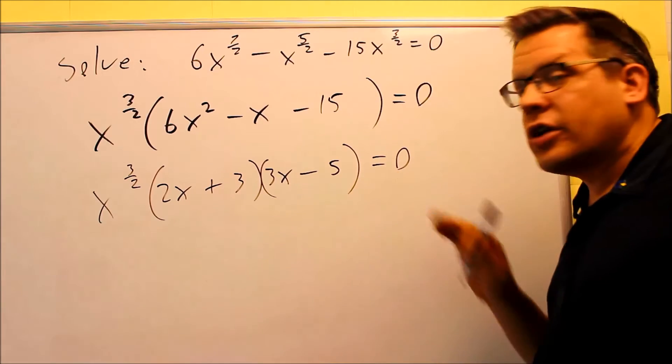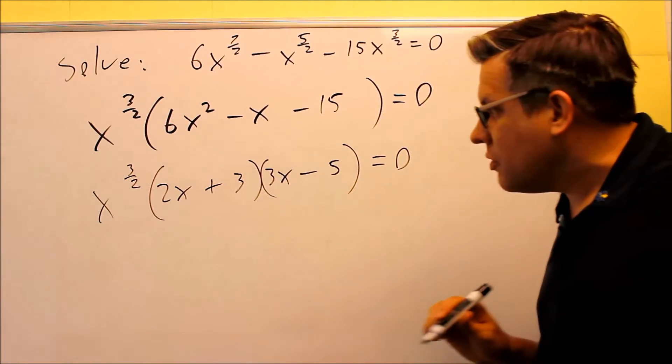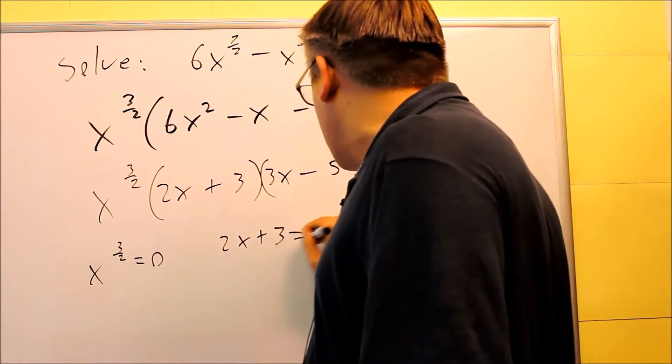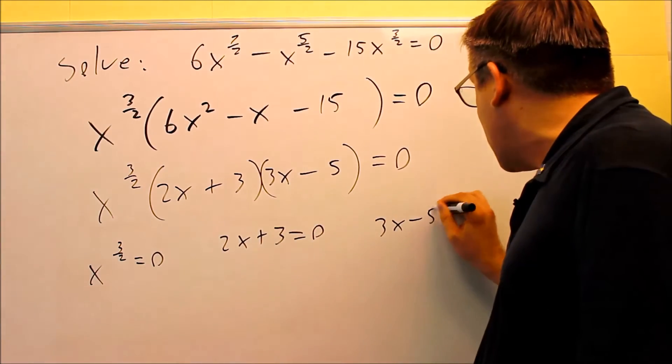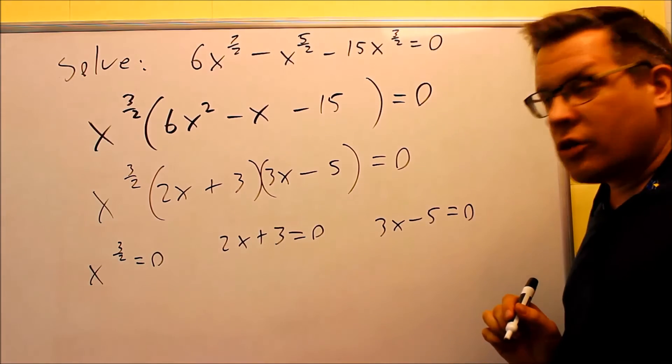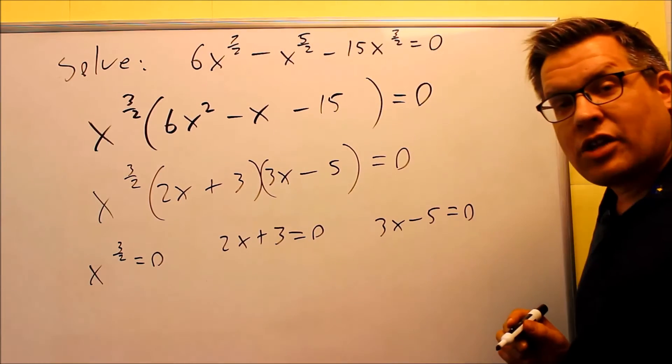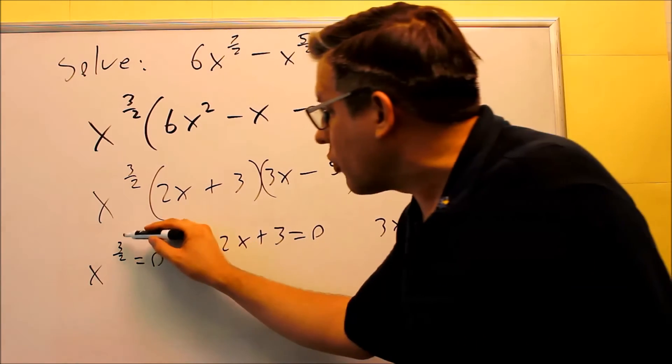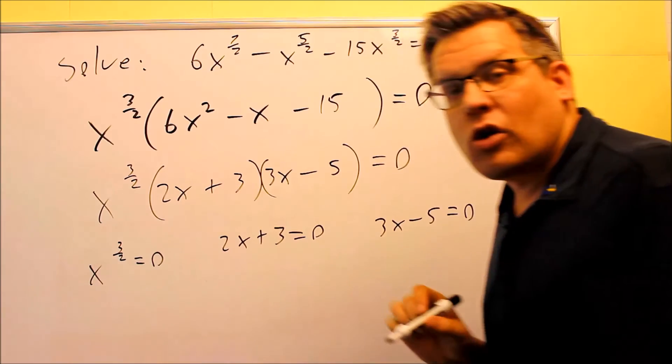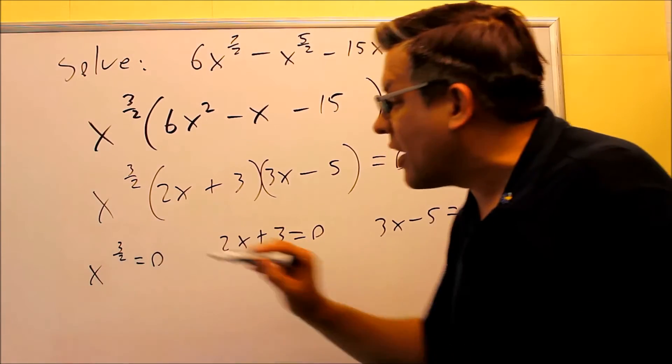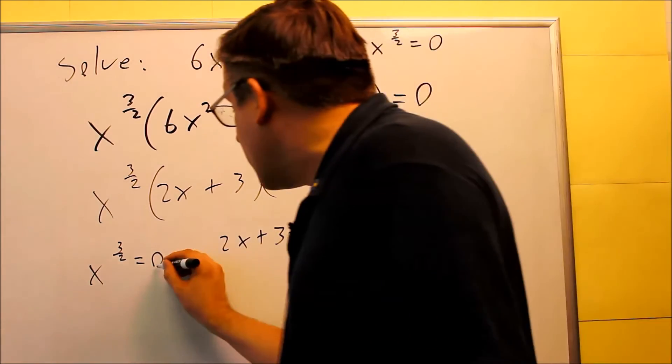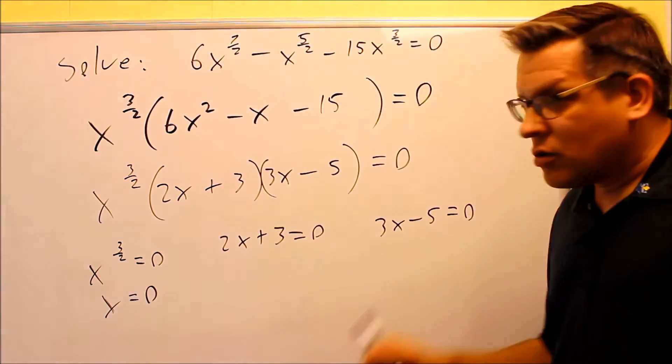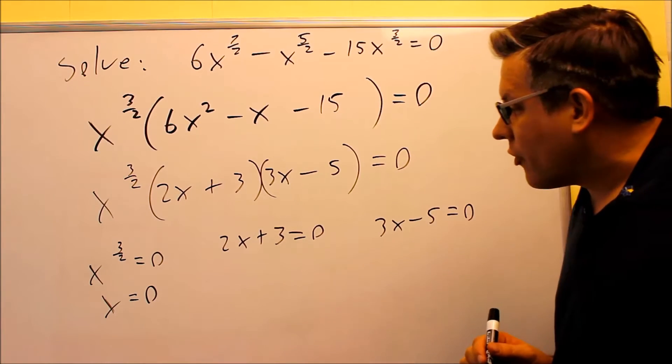Last thing you want to do is set all three of these factors equal to 0. x to the 3 halves equals 0. 2x plus 3 equals 0. 3x minus 5 equals 0. Setting all those equal. For this one, to clear out that fractional exponent, you're going to raise both sides to the power of 2 thirds. You basically just want to raise it to the reciprocal of that one, because that way when you multiply the exponents, you'll get a power of 1 there. Or we just know that 0 raised to anything is 0, so we can also get it that way. So x is 0. That's one of our answers.